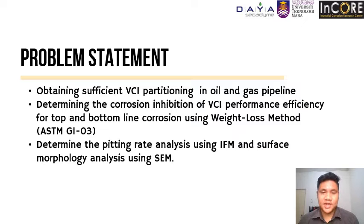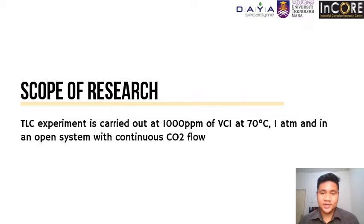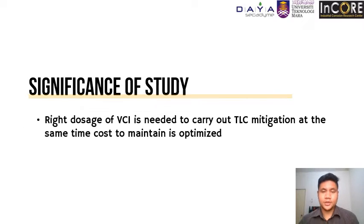This is an international standard prescribed by the American Society of Testing and Materials, ASTM. After the experiment is completed, the corroded metal sample surface is then analysed using IFM and SEM. In this research project, VCI partitioning tests will be carried out in oil and brine phase. Different concentrations of VCI — 200, 500 and 1000 ppm — will be inserted and the amount of successful partitioning will be determined. The TLC experiment is carried out at 1000 ppm of VCI at 70 degrees Celsius at 180 rpm in an open system with continuous carbon dioxide gas flow. The right dosage of VCI is needed to carry out TLC mitigation while keeping costs optimised.